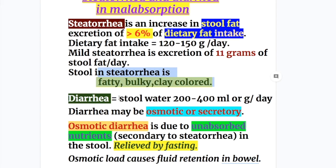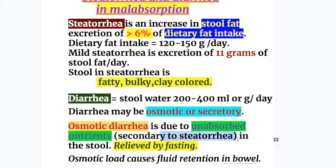What's diarrhea? Diarrhea is stool water of 200 to 400 milliliters or grams per day, depending on the fiber diet. Diarrhea may be osmotic or secretory. Osmotic diarrhea is due to unabsorbed nutrients due to steatorrhea.